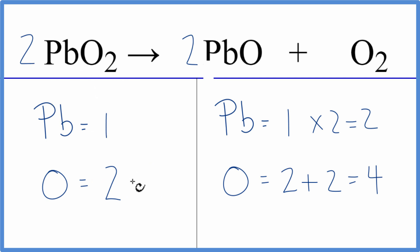So we have two times two, that'll give us four oxygens, those are balanced, and one times two that'll give us two lead atoms and we're done. This equation is balanced.